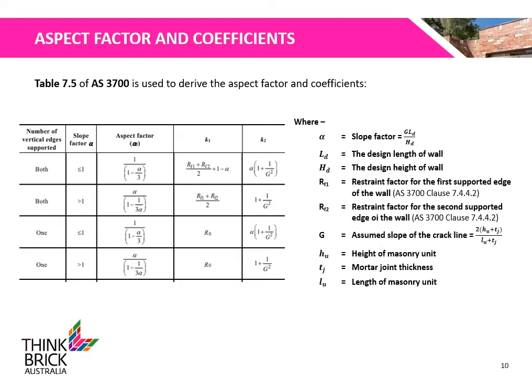Table 7.5 of AS3700 is used to derive the aspect factors and coefficients K1 and K2, where alpha is the slope factor, LD is the design length of the wall, HD is the design height of the wall, RF1 is the restraint factor for the first supported edge, RF2 is the restraint factor for the second supported edge, G is the assumed slope of the crack line, HU is the height of the masonry unit, TJ is the mortar joint thickness, and LU is the length of the masonry unit.